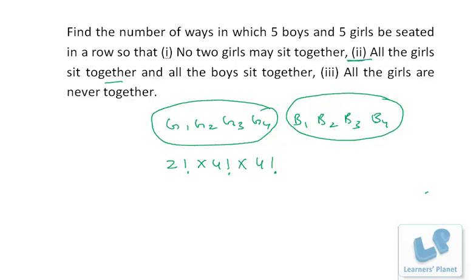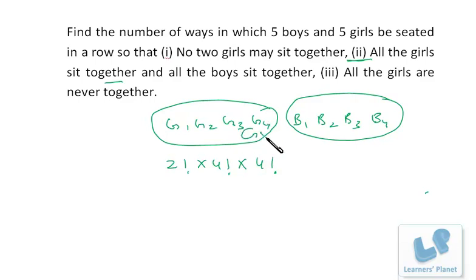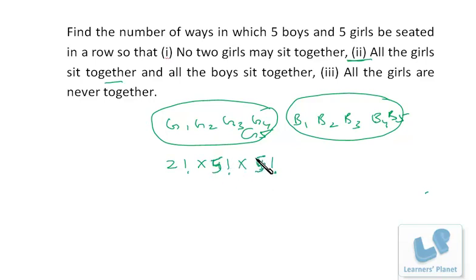I'm sorry, there were five girls. So it's G5 and Boy 5. So it will be 5! and 5!. The concept is the same — the answer becomes 2! × 5! × 5!.